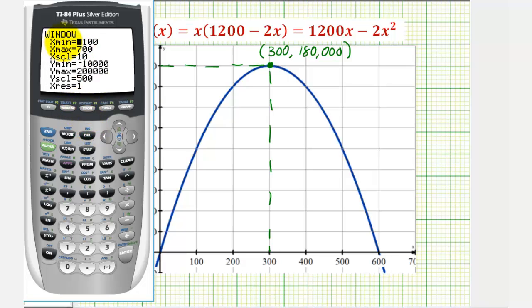And we do have to change the window; to save time, I've already adjusted the window. Notice how the x values go from negative 100 to 700. The y values go from negative 10,000 to 200,000. And now if we press graph, we can use the calculation feature to determine the vertex. We can press second, trace for calculation. And then we want option four for maximum.